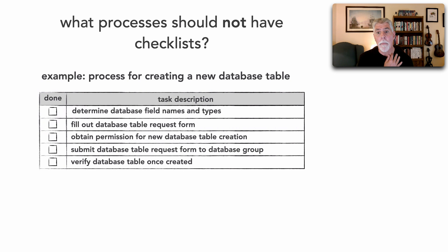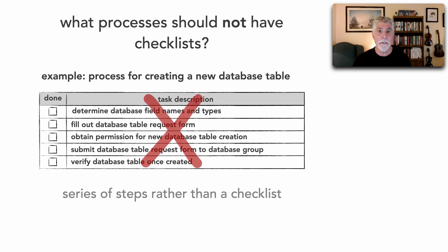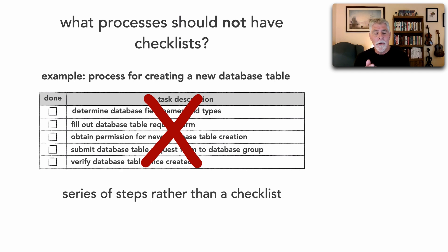Here's a good example of a process that should not be a checklist: creating a new database table. You fill out the field names and types in a form, fill out the request form with those fields and types, obtain permission for table creation, submit the request form to the database group, then verify once it's created. This is not a checklist — it's a series of dependent steps. I can't verify the table until I obtain permission, and I can't obtain permission until I determine the fields and types.